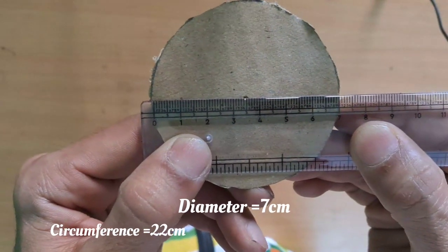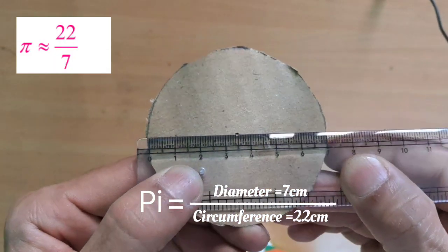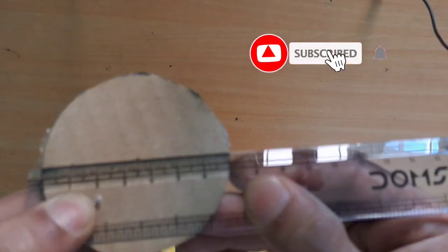7 cm. I'm sure we have to set the value of Pi, 22 by 7. Do you understand?